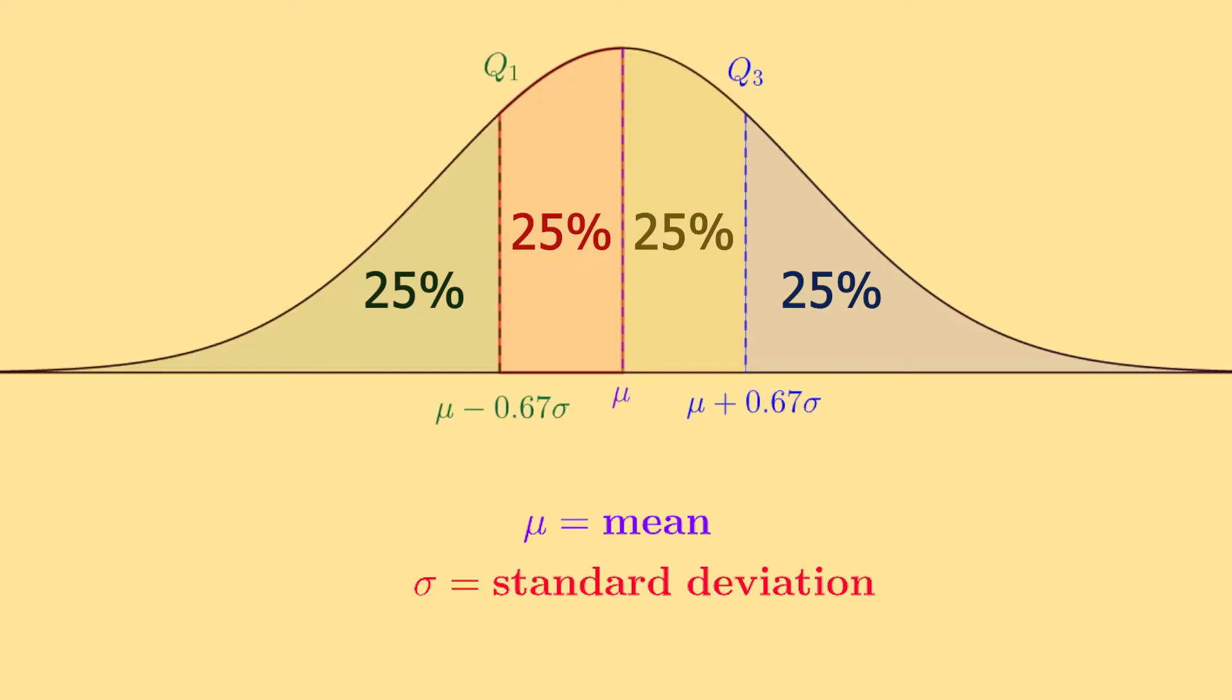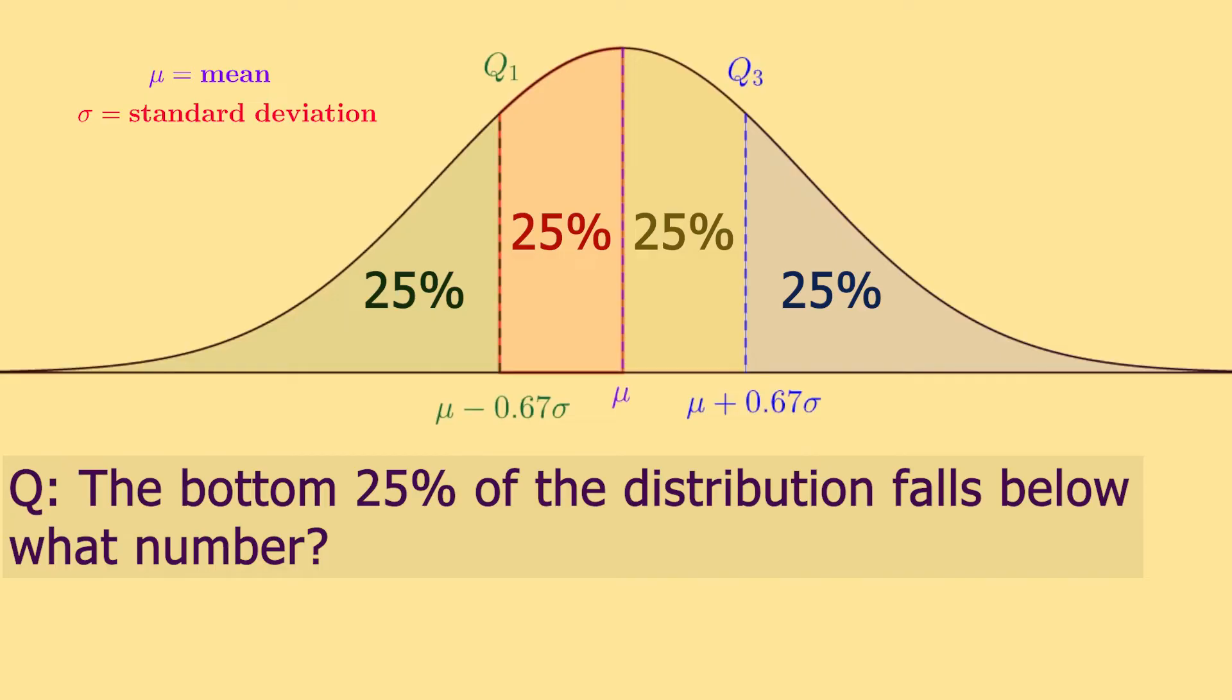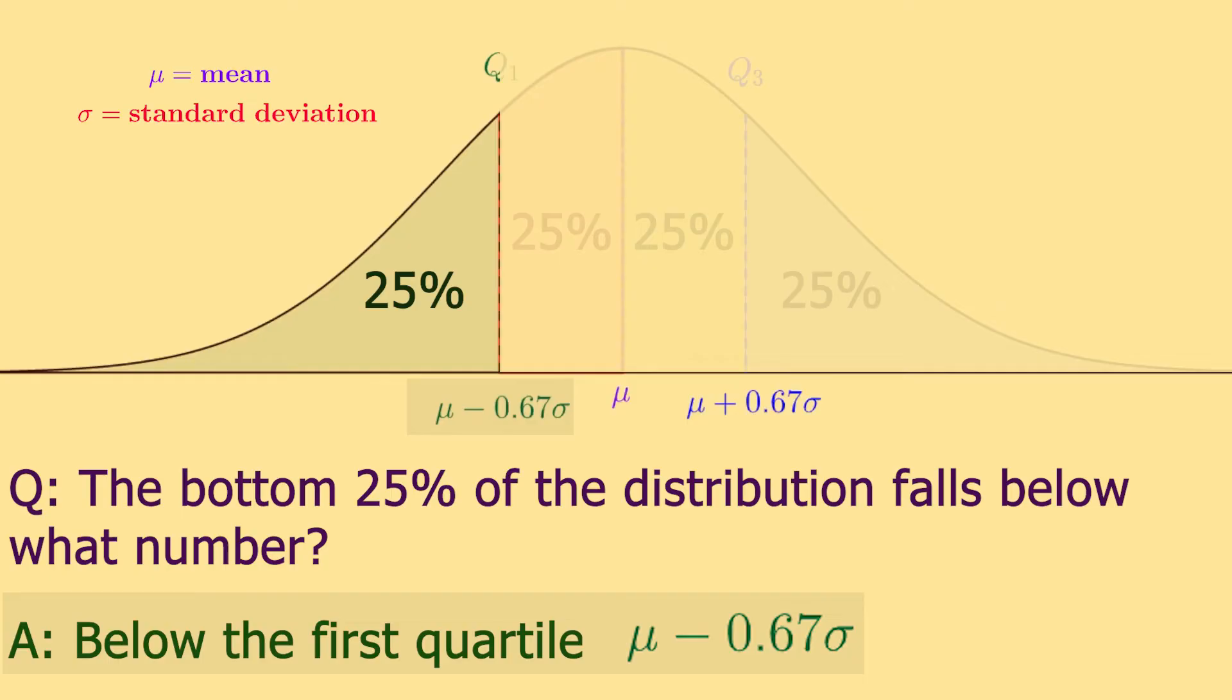So if you have problems asking, say, the bottom 25% of your distribution falls below what number, well you would use this value here, the mean minus 0.67 times the standard deviation.